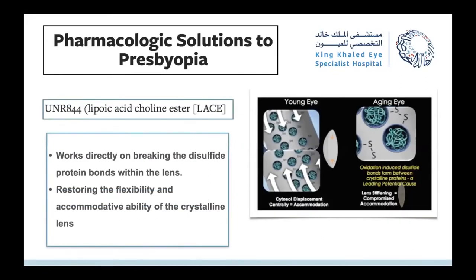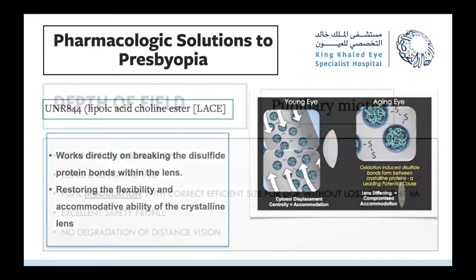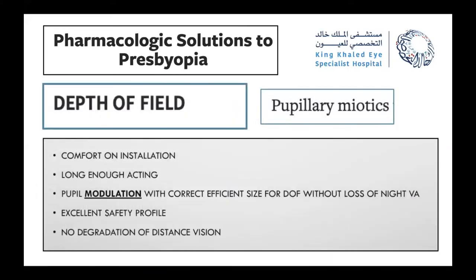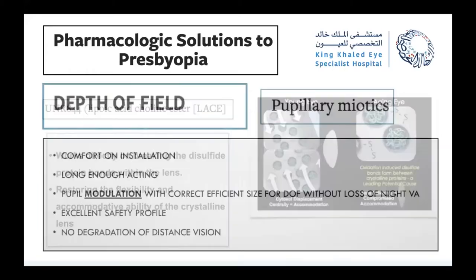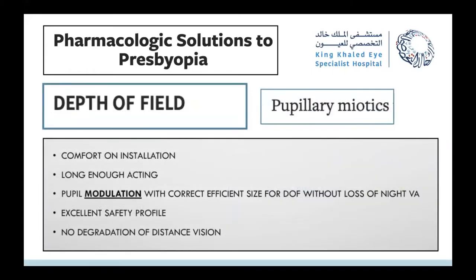In the first approach, lipoic acid works directly on the disulfide protein bonds of the lens to restore its flexibility, allowing the cytosol to move freely so the lens can change shape for near and intermediate activities. This is still under research and has not yet been FDA-approved for clinical practice.